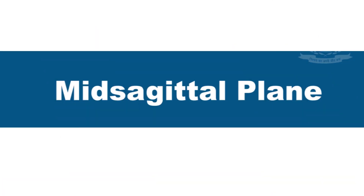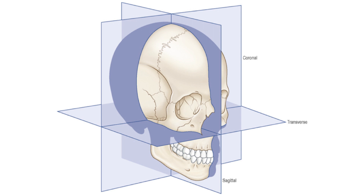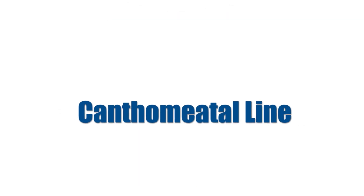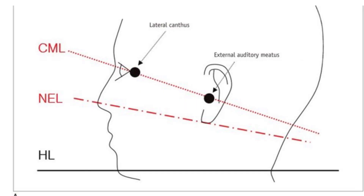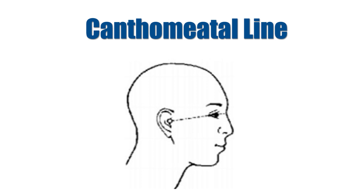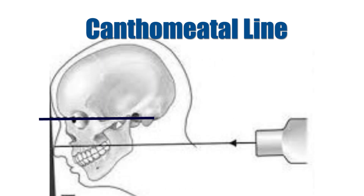The next step in the extraoral technique is patient positioning. Before we position the patient for the extraoral radiograph, it is important to know certain reference planes. The first is the mid-sagittal plane, determined by a line coincident with the sagittal suture between the upper margins of the parietal bone. The next reference plane is the canthomeatal line, also called the orbitomeatal line — an imaginary line joining the central point of the external auditory canal to the outer canthus of the eye. This line represents the base of the skull, hence it is also called the radiographic baseline.